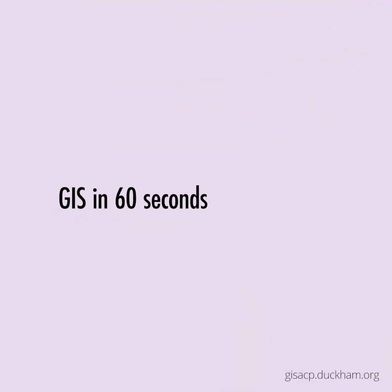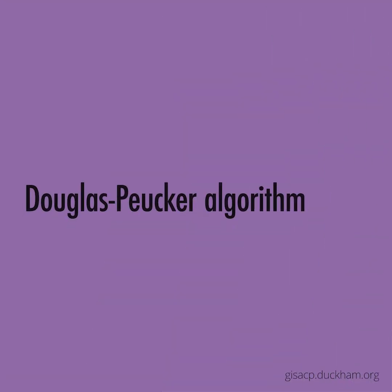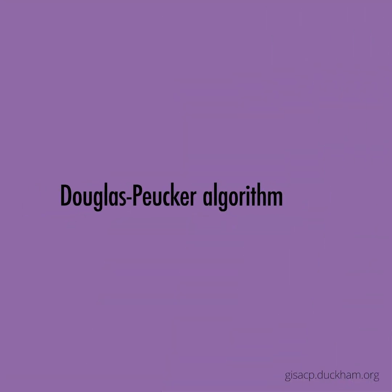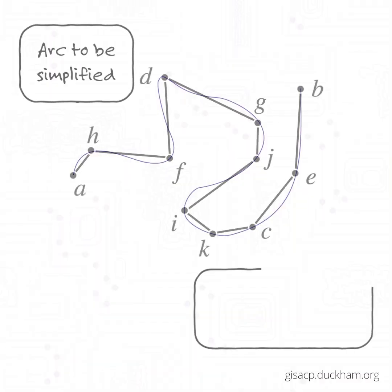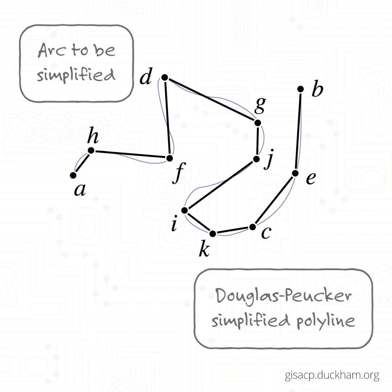Line simplification reduces the level of detail in an arc or polyline while retaining its essential geometric character. The most famous line simplification algorithm in GIS is called the Douglas-Peucker algorithm.